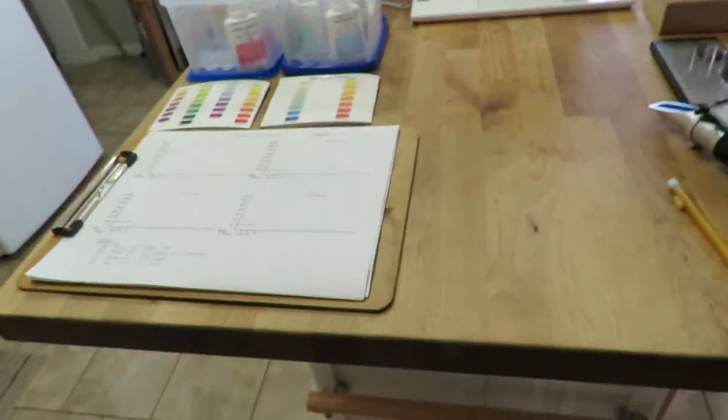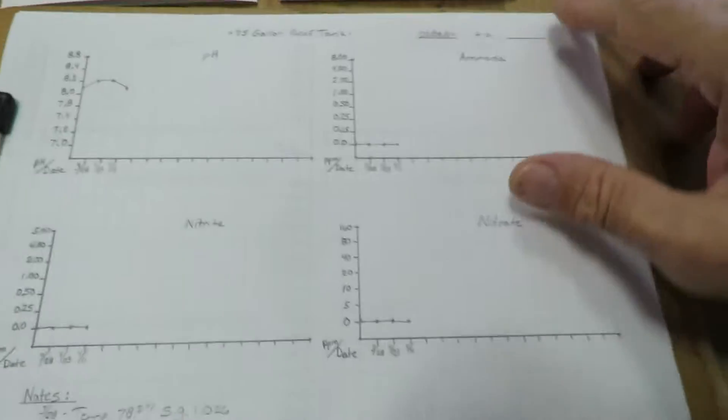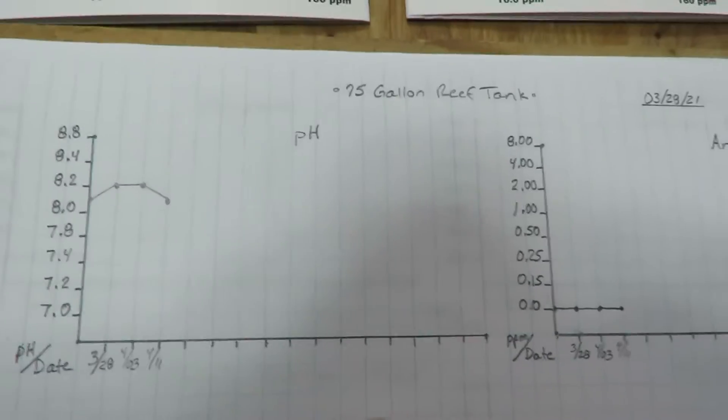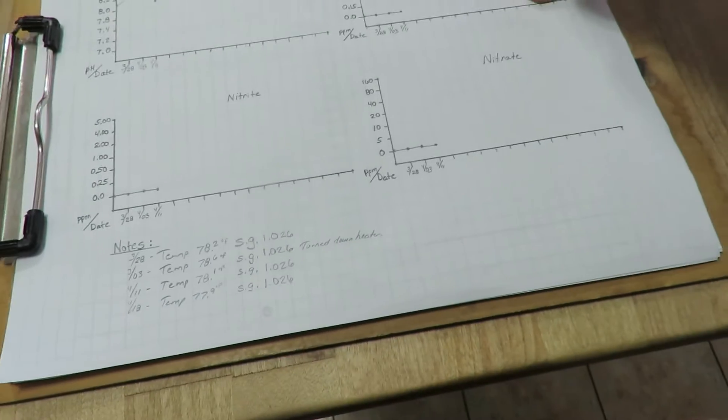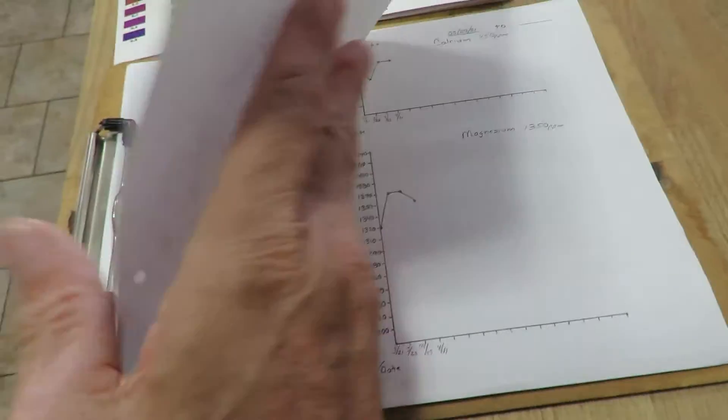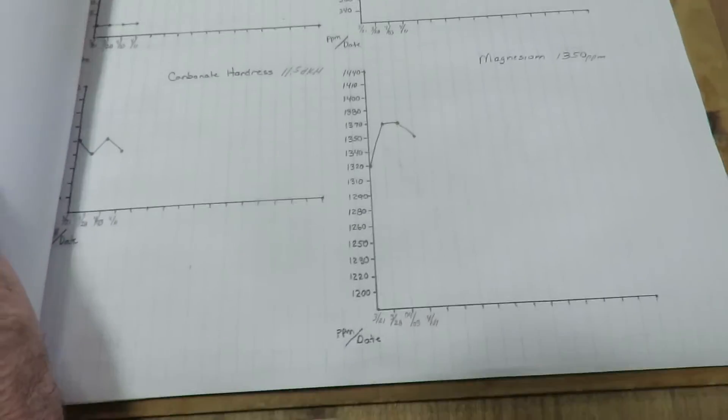Got her all set up here. I might be old school, but I just keep track of stuff on a bar graph. This I can track my pH, ammonia, nitrites, nitrates, phosphates, calcium, carbonate hardness and magnesium that way I can see where I'm at.